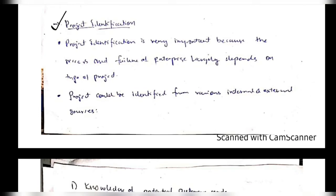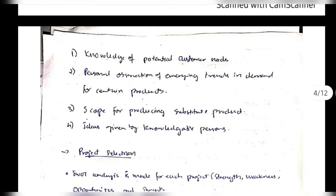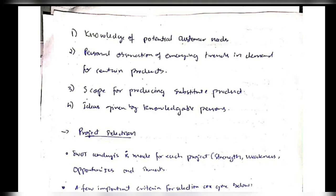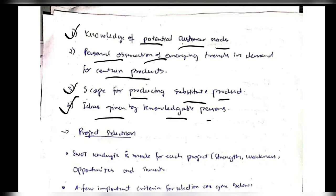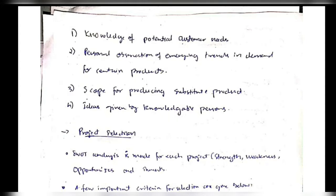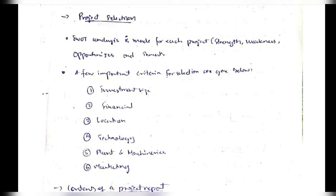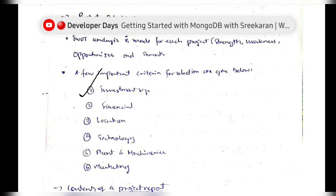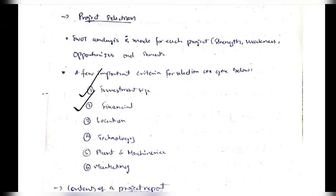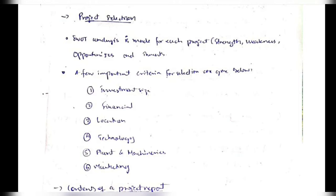How to identify a project: project identification is very important because the success and failure of a company depends on the type of the project. Here are some of the things we need to keep in mind: knowledge of the potential customer needs, personal observation of the trends, scope of producing the product, and ideas by knowledgeable persons. These four factors are necessary before we take any step to develop the project. For project selection, we need to keep in mind factors like investment size, finance and location, technology, plant and machinery, and marketing.